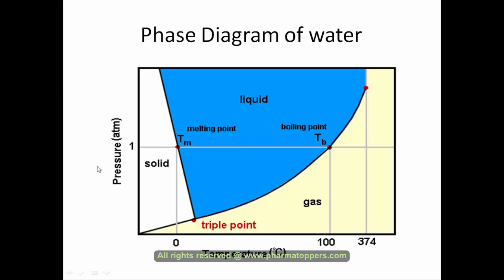Further increasing the temperature at constant pressure — the pressure of one atmosphere — if we keep increasing the temperature, it will cross the 100 degree mark. And that is the point where liquid gets converted to the gas phase. It is termed as the boiling point of water.